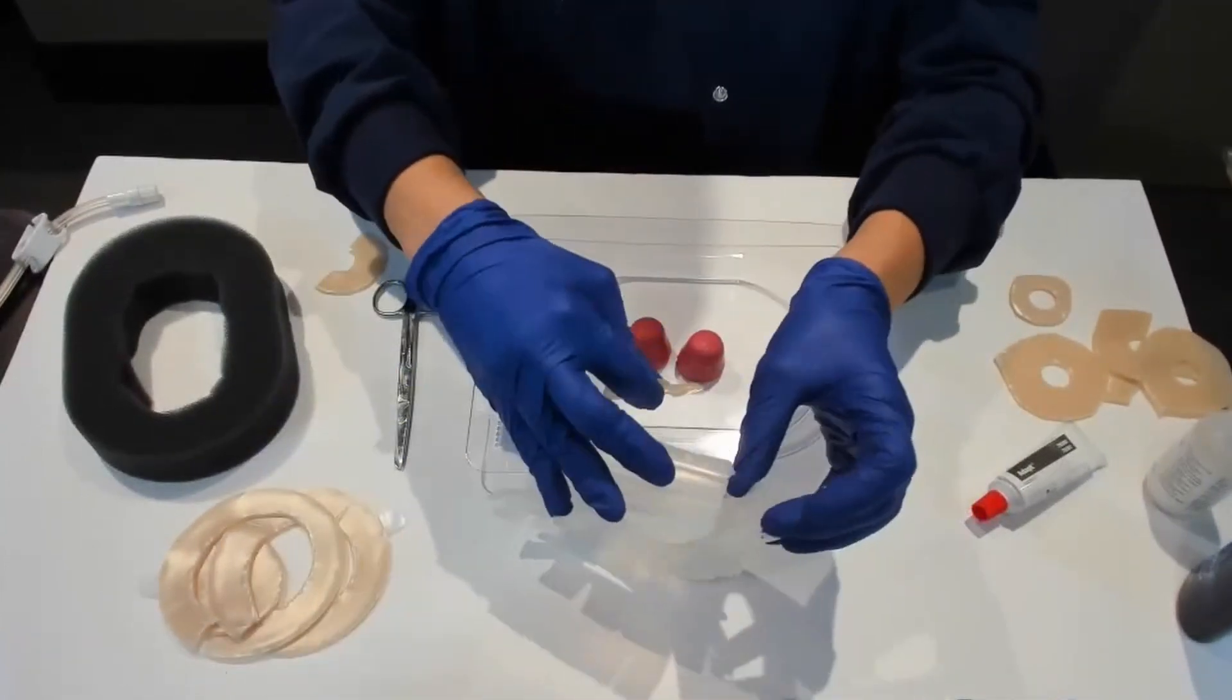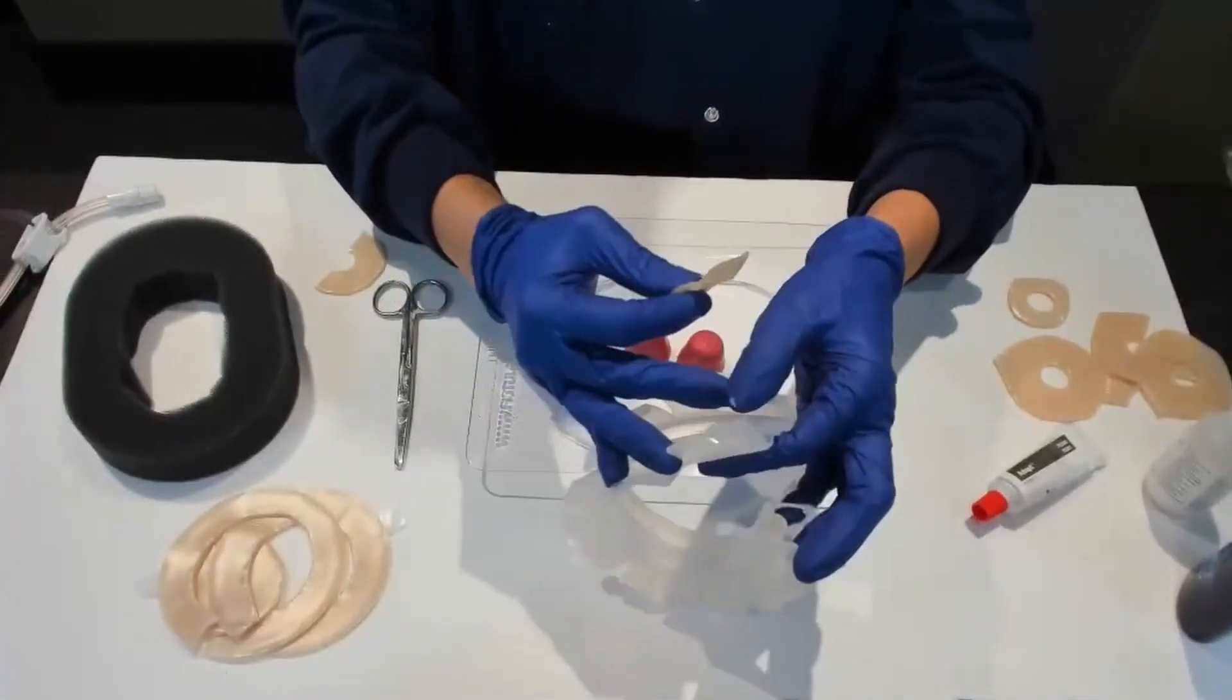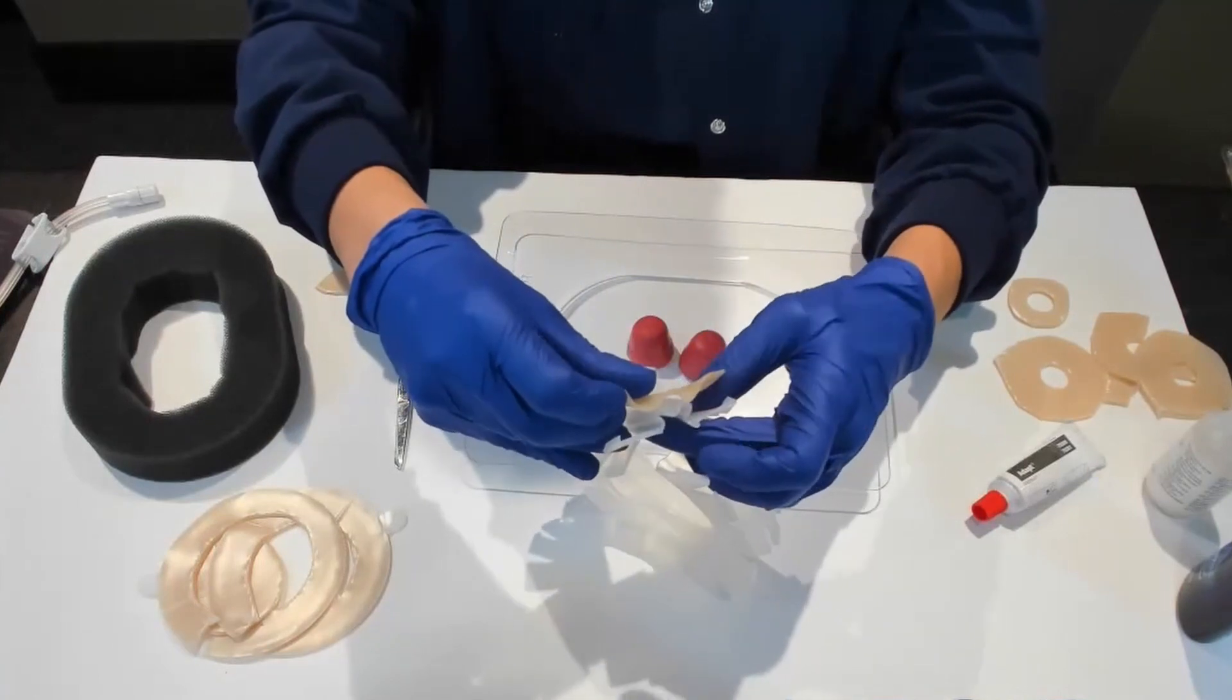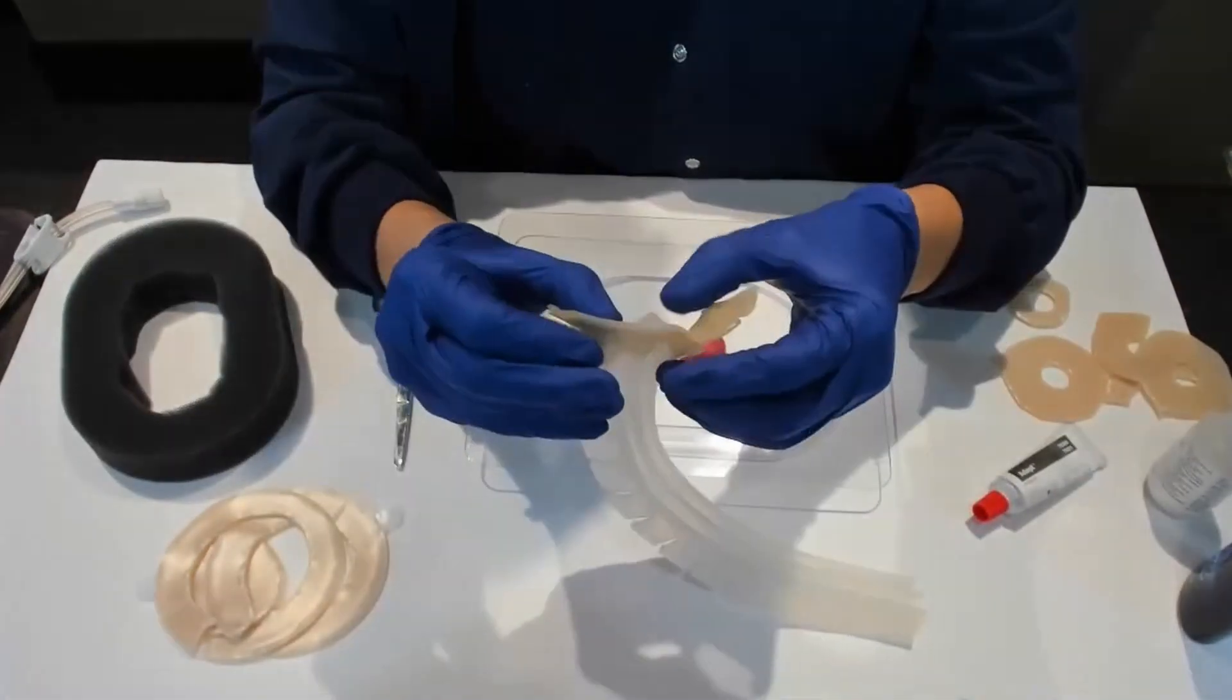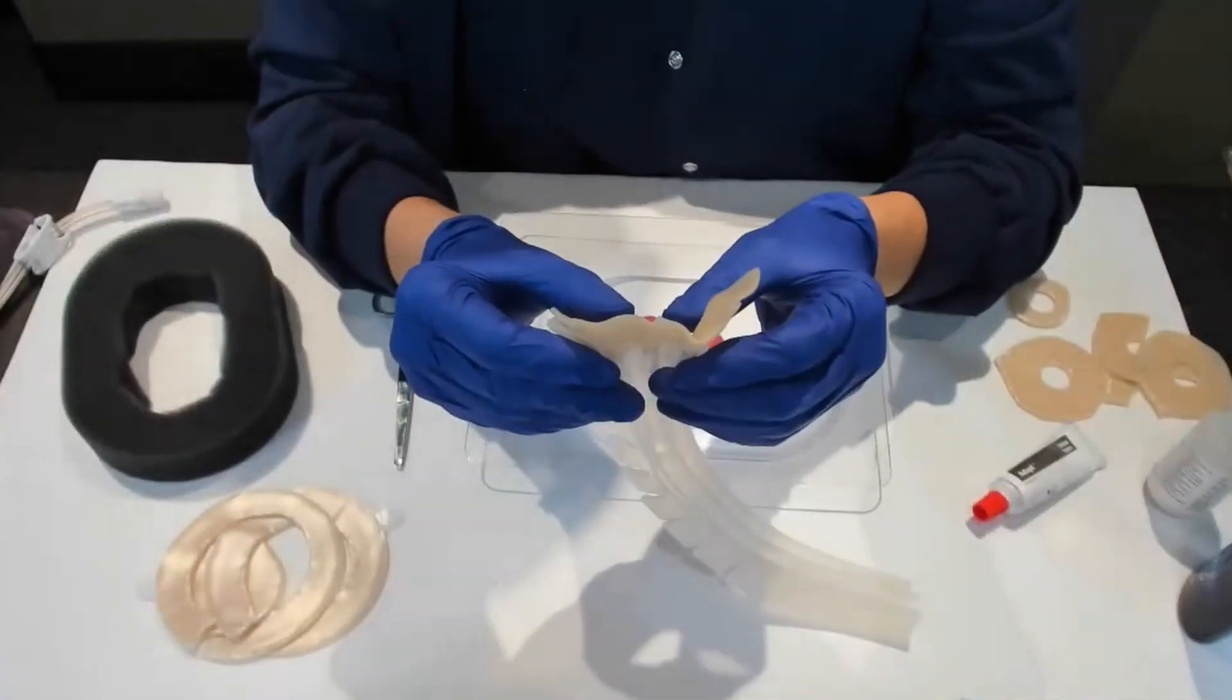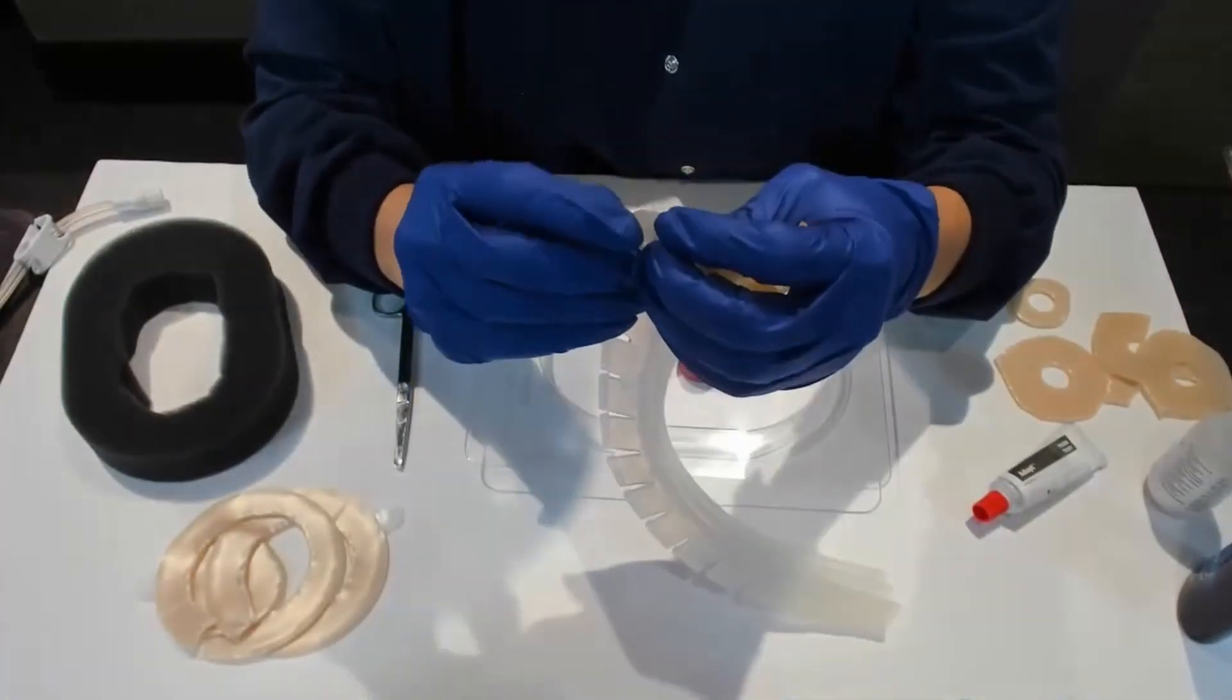You're going to want to take some of this sticky stuff. Where it marries itself up again, you want to make sure you have hydrocolloid across that juncture. Then you really want it to marry itself up.